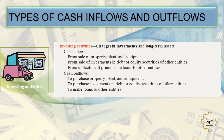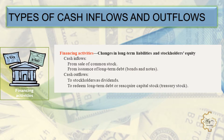Investing activities involve changes in investments and long-term assets. Cash inflows come from the sale of property, plant and equipment, and from the sale of investments in debt or equity securities. Cash outflows go to purchase property, plant and equipment, to purchase investments in debt or equity securities of other entities, and to make loans. Financing activities involve changes in long-term liabilities and stockholders' equity. Cash inflows come from the sale of common stock and issuance of long-term debt. Cash outflows go to stockholders as dividends and to redeem long-term debt or reacquire capital stock.